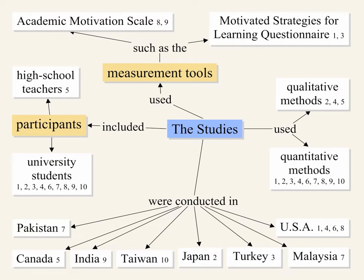Analysis of the methods of the selected studies helped to clarify the research methodologies. Several of the studies used previously developed measurement tools, such as the academic motivation scale and the motivated strategies for learning questionnaire. The research participants in nine of the studies were university students. Only one study involved interviews with high school teachers, and this was also the only study that used qualitative methods.